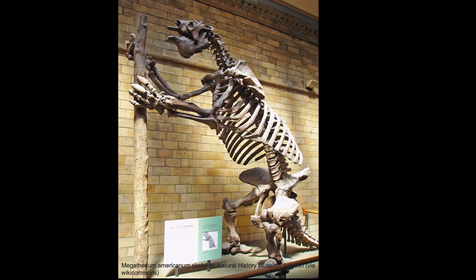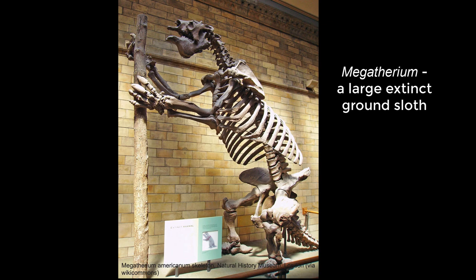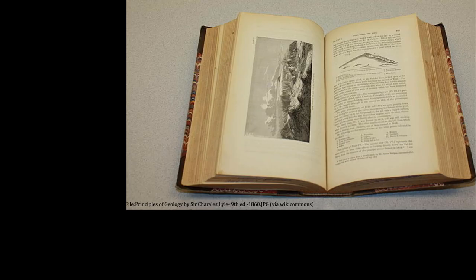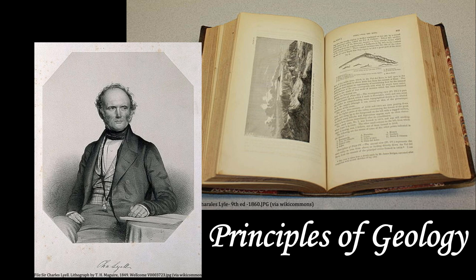Darwin would find and identify the remains of a giant ground sloth, Megatherium, and would remark in his notebook that many fossils of extinct species seemed similar to the animals he would find in similar areas. Darwin also read Charles Lyell's Principles of Geology, which detailed how geological formations could change over very long periods of time — say millions of years — which was quite different from the general thoughts on geology at that time.